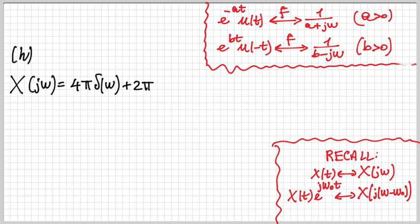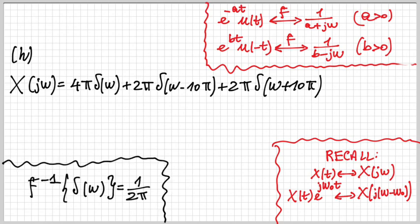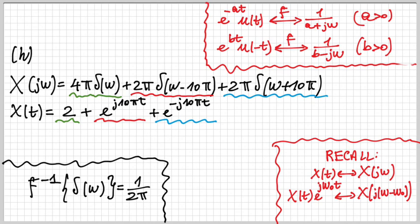Part h has X(jω) given by the sum of three frequency-domain impulses. Using the same property, x(t) is the sum of three inverse transforms by linearity: the first term gives 4π · 1/(2π) = 2, the second (shifted by 10π) gives e^(j10πt), and the third gives e^(−j10πt). This simplifies to x(t) = 2 + 2cos(10πt).